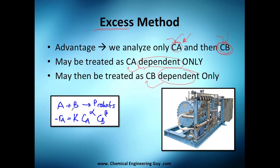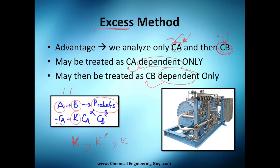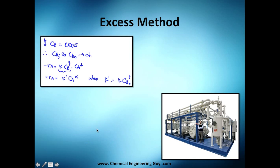So let's say we have A and B reacting to form products — it's a one-to-one ratio. Probably you don't know the order, or they tell you it's an elementary rate of reaction. The rate of reaction of A equals a constant k times [A]^α times [B]^β, where α is the order with respect to A and β is the order with respect to B. Since we're using power models, we don't know the orders yet.